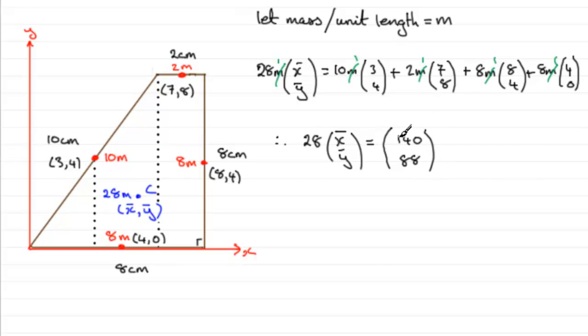So we need to divide these two numbers here by 28 to give us x bar, y bar. x bar, y bar then turns out to be 5. 140 divided by 28 is 5 exactly. But when it comes to 88 divided by 28, best give that as a fraction. 22 over 7 gives it the exact value rather than just a decimal. And if you wanted to give it as a coordinate, then therefore x bar, y bar would equal 5 and 22 over 7.